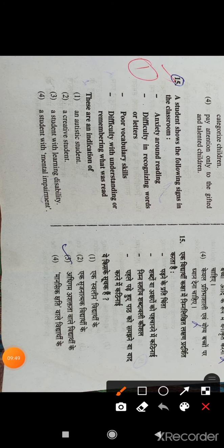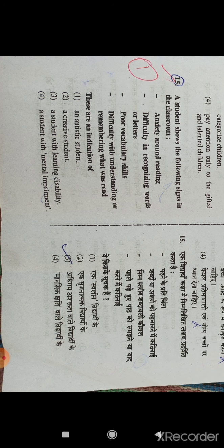Question number 15: A student shows the following signs in the classroom: anxiety around reading, difficulty in recognizing word or letter, poor vocabulary skills, difficulty with understanding or remembering what was read. These are signs of dyslexia or reading difficulties.